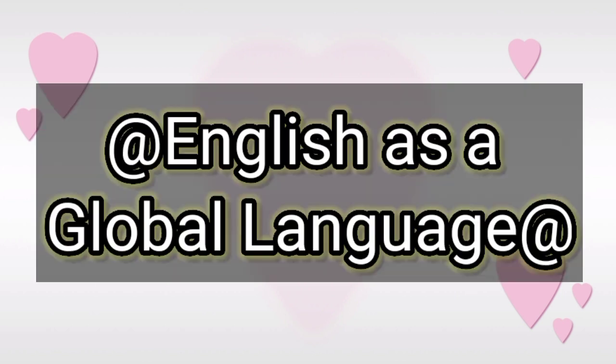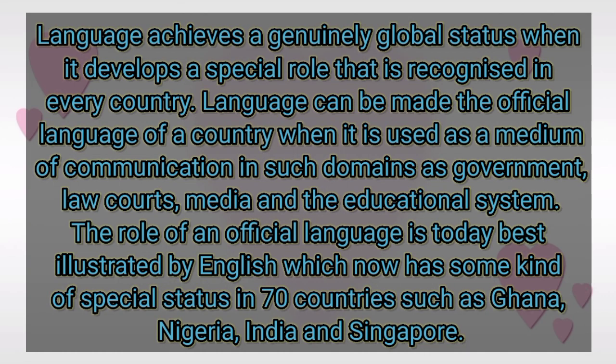Next, we will discuss about English as a global language. A language achieves genuinely global status when it develops a special role that is recognized in every country — when that language is part and parcel of the lives of human beings. A language can be made the official language of a country when it is used as a medium of communication in domains such as government, law courts, media, and the educational system.